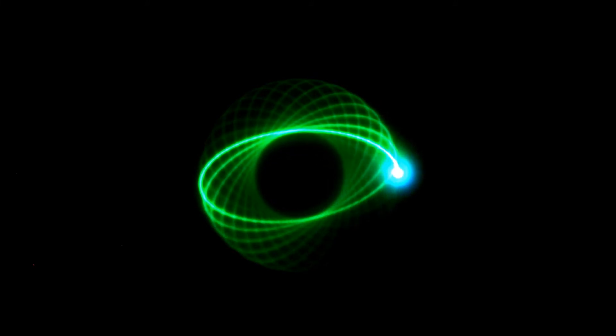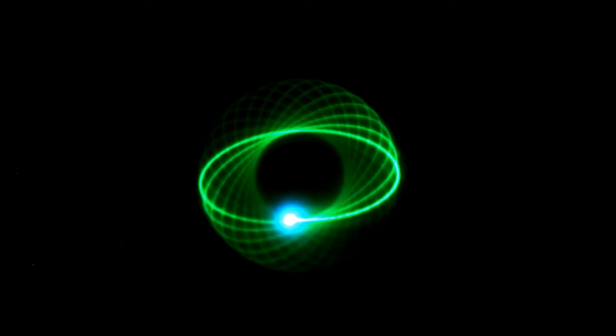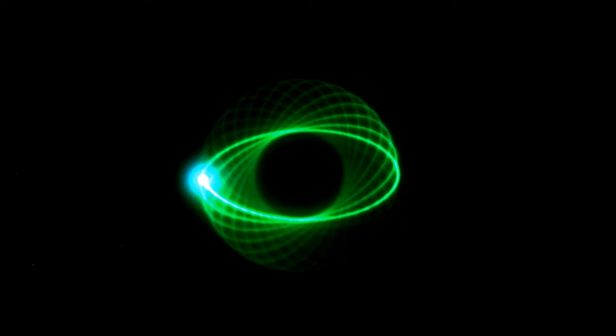This is the Lumiscope. It's a motorized drawing machine that moves a small ultraviolet light behind a sheet of plexiglass that's been painted with phosphorescent paint.